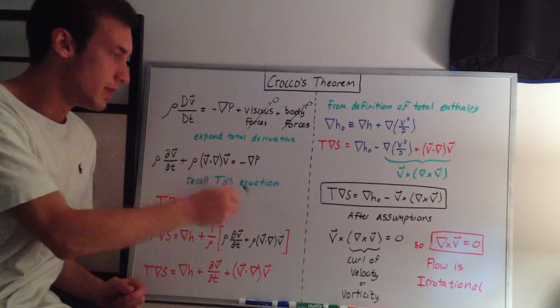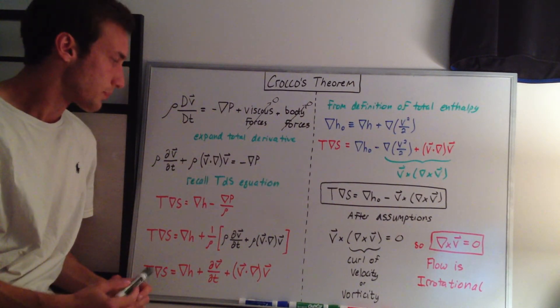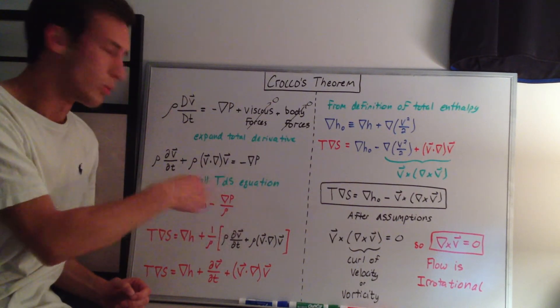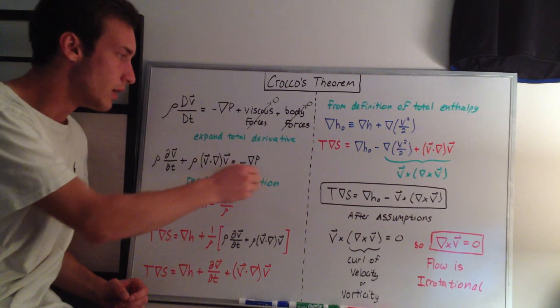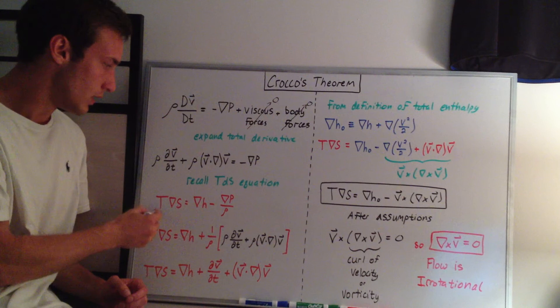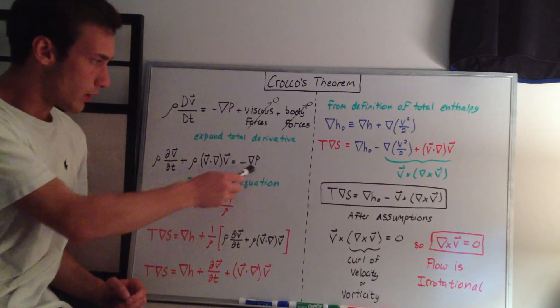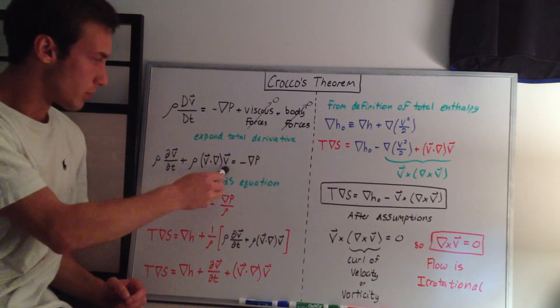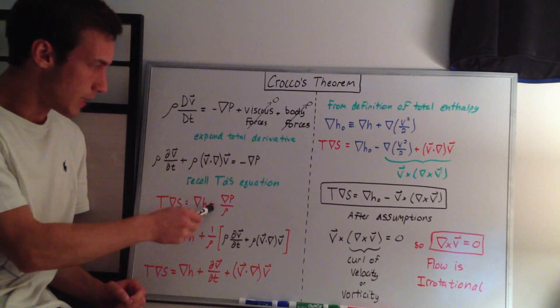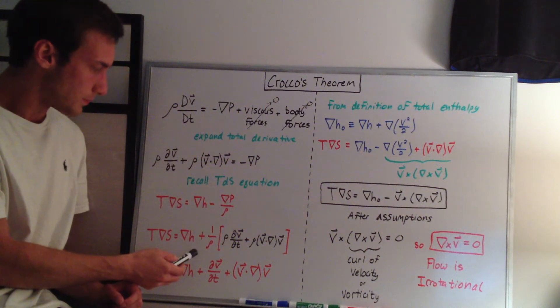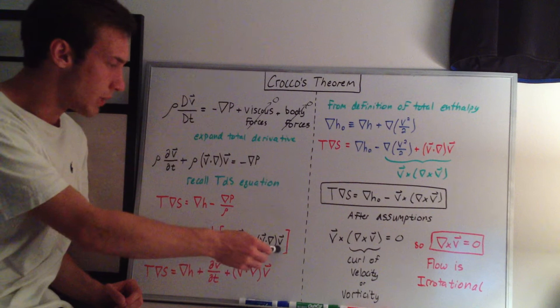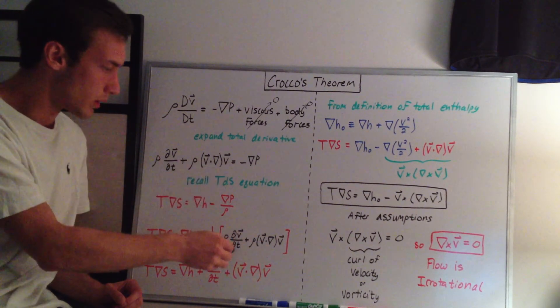Okay, so then if we recall the TDS equation, of which I have a video as well, we can plug in, which is essentially the energy equation, or a reformulation of the energy equation. We can plug this negative grad p into the TDS equation. So this is the TDS equation, and then we can plug this into here, so we're pretty much just putting this into this equation.